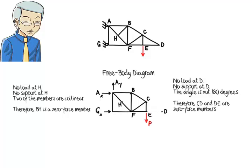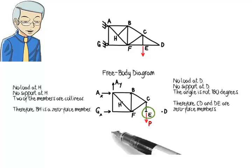If we consider P to be an axial force in a member vertically attached to joint E, then, according to Rule 3, EF is a zero-force member.